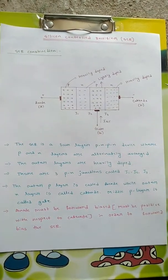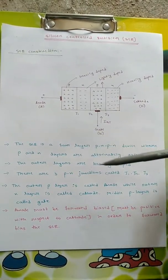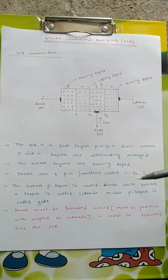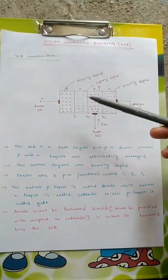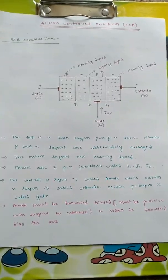The outer P layer is called anode while the outer N layer is called cathode. The middle P layer is called gate.